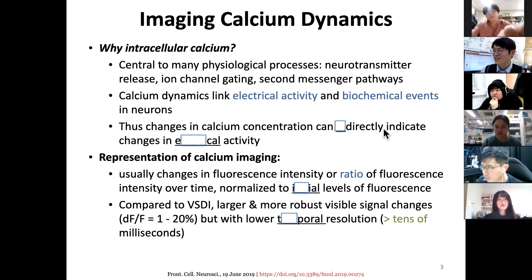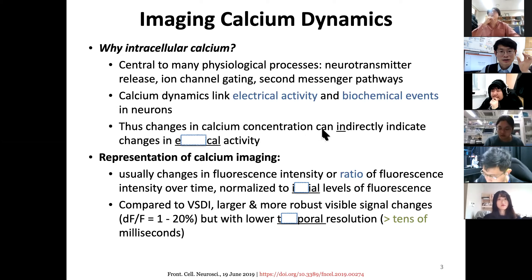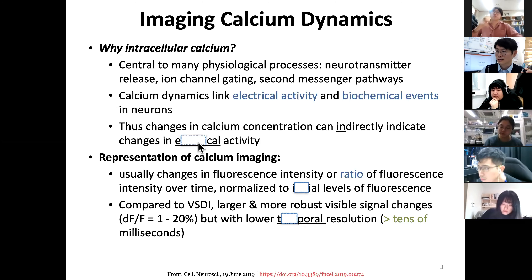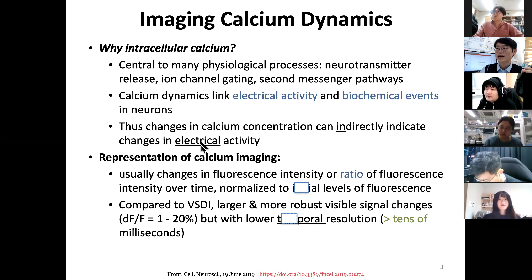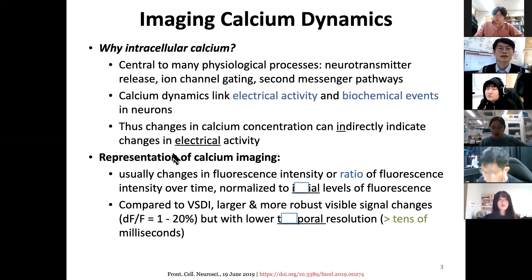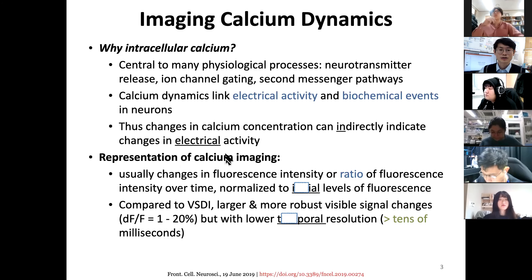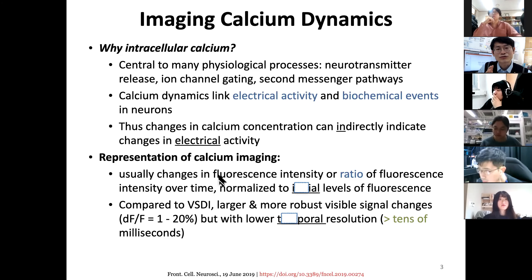Changes in calcium concentration can indirectly indicate neuronal activity — it is indirect because neuronal action potential and transmission are about electrical activity. We represent calcium concentration changes using imaging, usually by observing changes in fluorescence.